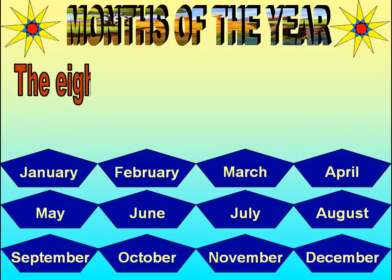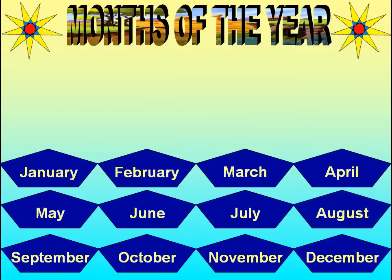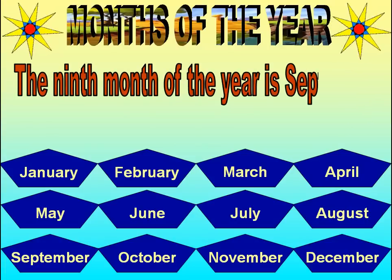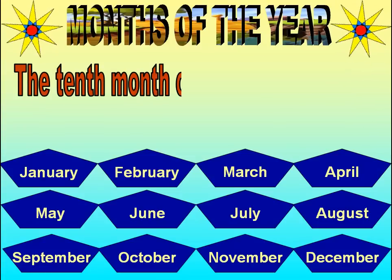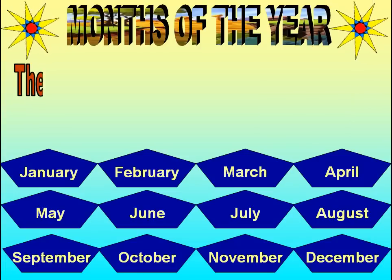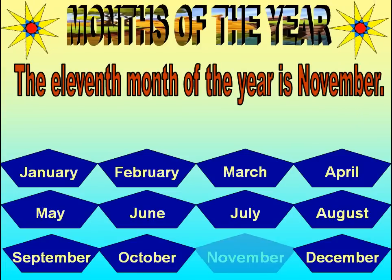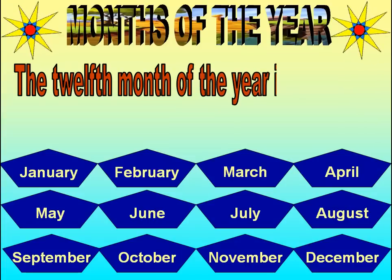The eighth month of the year is August. The ninth month of the year is September. The tenth month of the year is October. The eleventh month of the year is November. The twelfth month of the year is December.